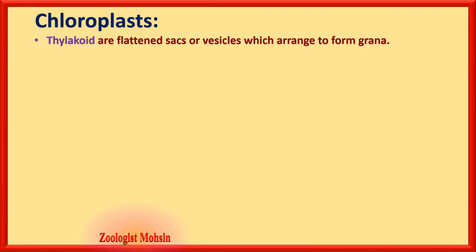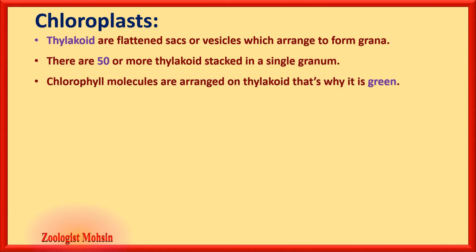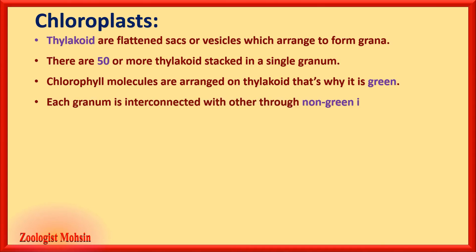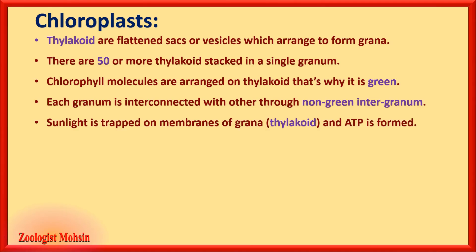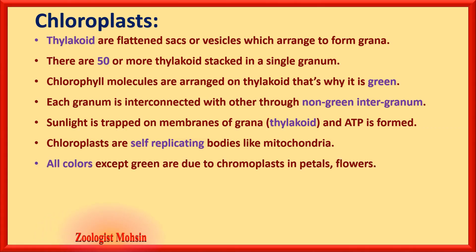Thylakoids are flattened sacs or vesicles arranged to form a granum. There are 50 or more thylakoids stacked in a single granum. Chlorophyll molecules are arranged on the thylakoids, making them green. Each granum is interconnected to others through non-green intergranal connections. Sunlight is trapped on the membranes of grana (thylakoids) and ATP is formed there. Chloroplasts are self-replicating bodies like mitochondria, because they have their own circular DNA.